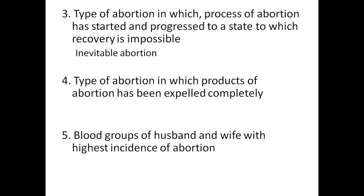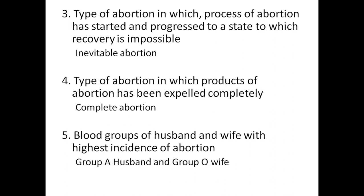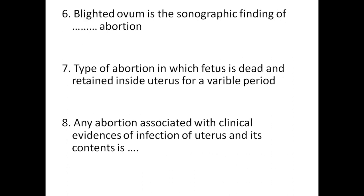The type of abortion in which the products of conception have been expelled completely is called complete abortion. The blood groups of husband and wife with the highest incidence of abortion are Group A husband and Group O wife. 'Blighted ovum' is the sonographic finding of missed abortion. The type of abortion in which the fetus is dead and retained inside the uterus for a variable period of time is called missed abortion.